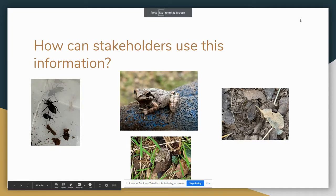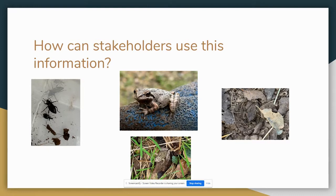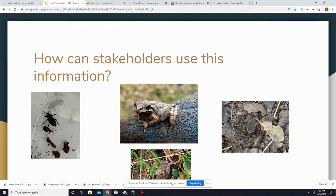How can stakeholders use this information? Frog species such as the red-legged frog are currently in decline, and conservation groups can use this information to further study the behavior of amphibians and specifically frogs, and know what attracts them and increases their abundance in an oak woodland area. They can also use this information by understanding the importance of terrestrial invertebrates in an oak woodland system.